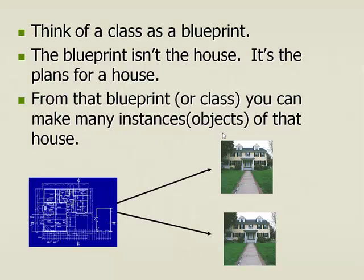When we say the word object and instance — same thing. You can have multiple instances of a house from a blueprint. You can have multiple objects of a house from a blueprint.